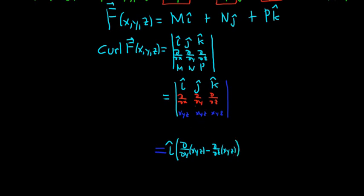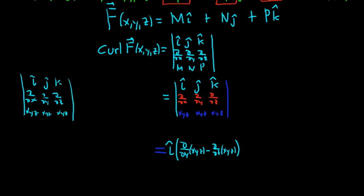We get this by crossing out the first row and first column of the matrix. So with i, j, k in row one, ∂/∂x, ∂/∂y, ∂/∂z in row two, and xyz in each entry of row three — we cross out the first row and first column, giving us this times this minus this times this. Then it's minus j-hat for the next term.